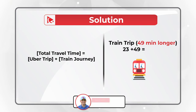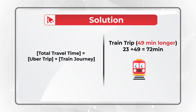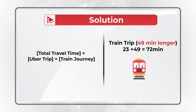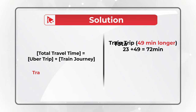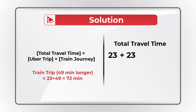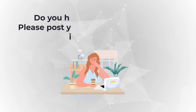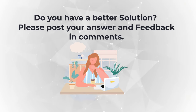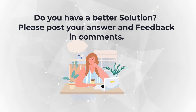To calculate the train journey time, you need to add 23 minutes of the Uber trip to 49 minutes, because the train journey is 49 minutes longer than the Uber trip. So the correct answer here is Choice C: 23 plus 23 plus 49, a total of 95 minutes. Hopefully you've nailed this question and will now look for these tricky problems on the test.